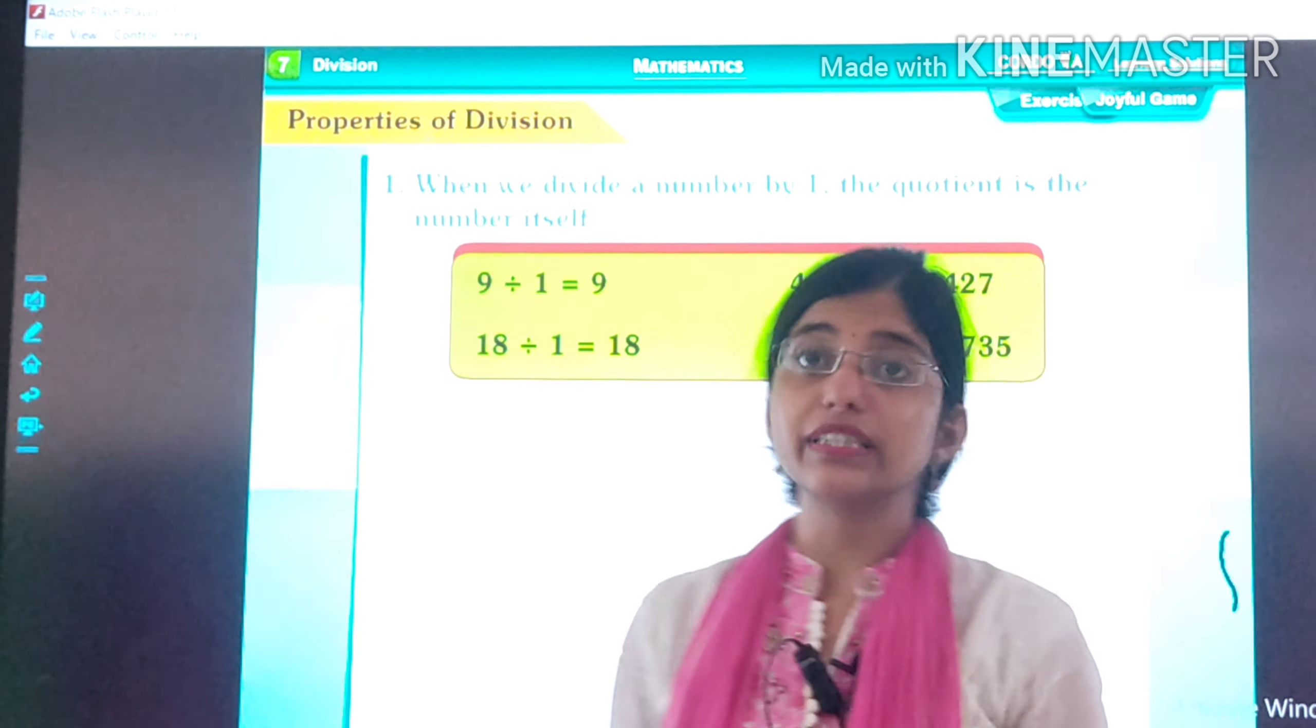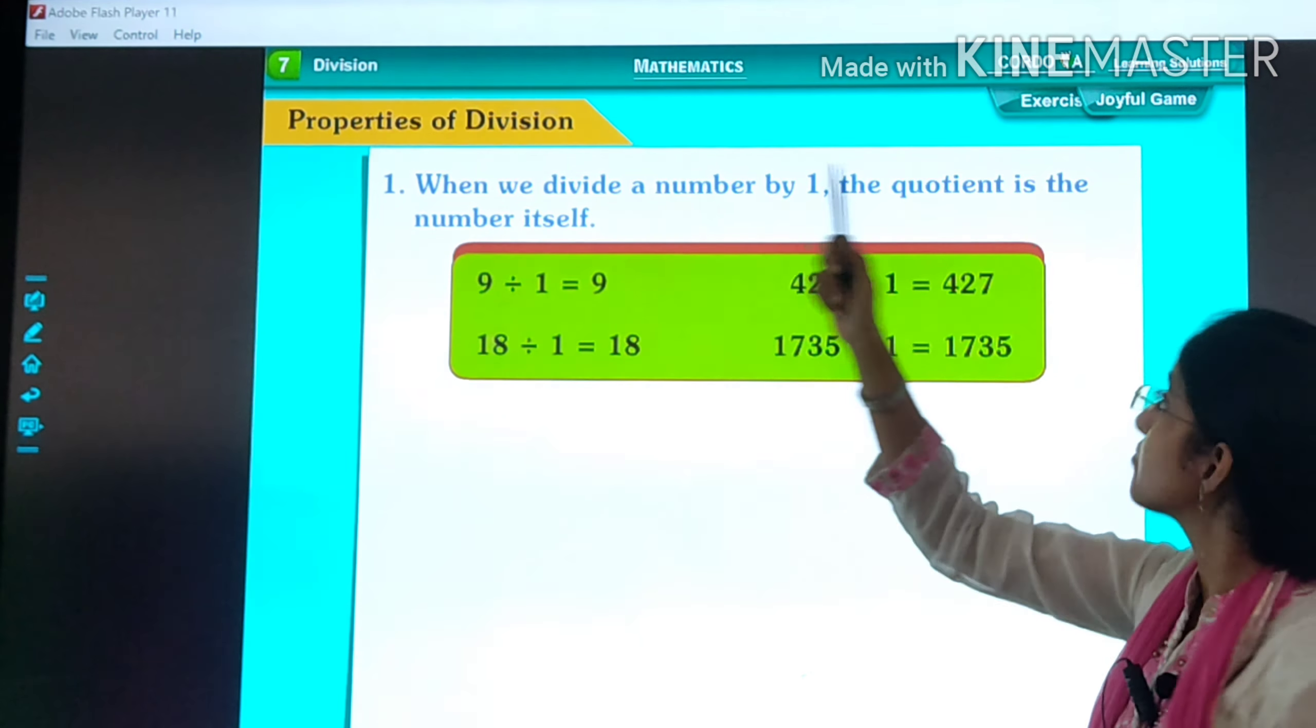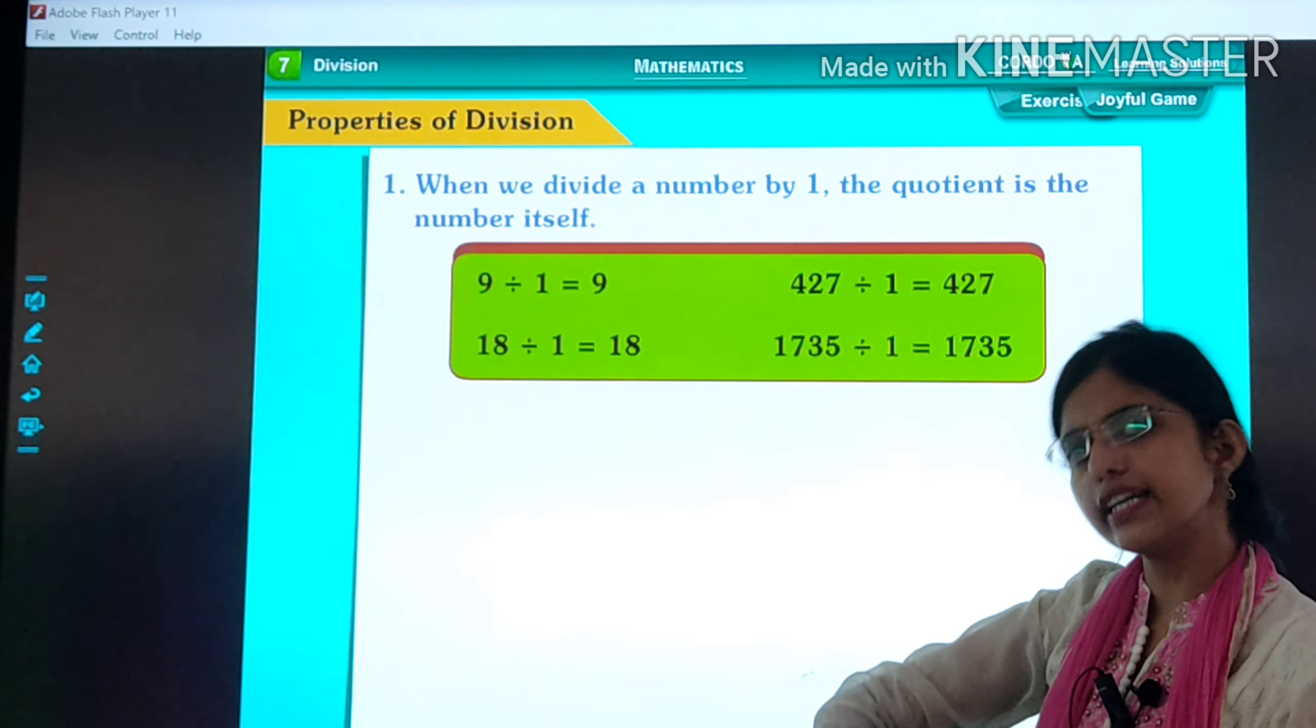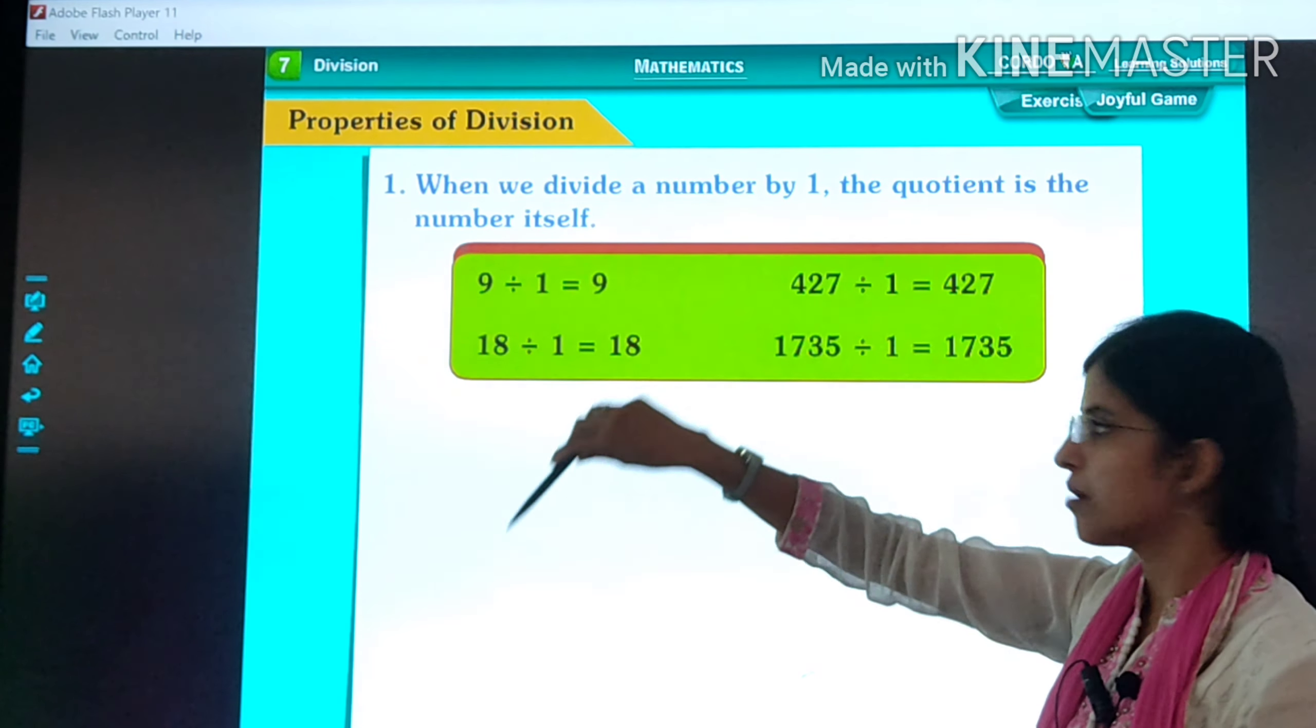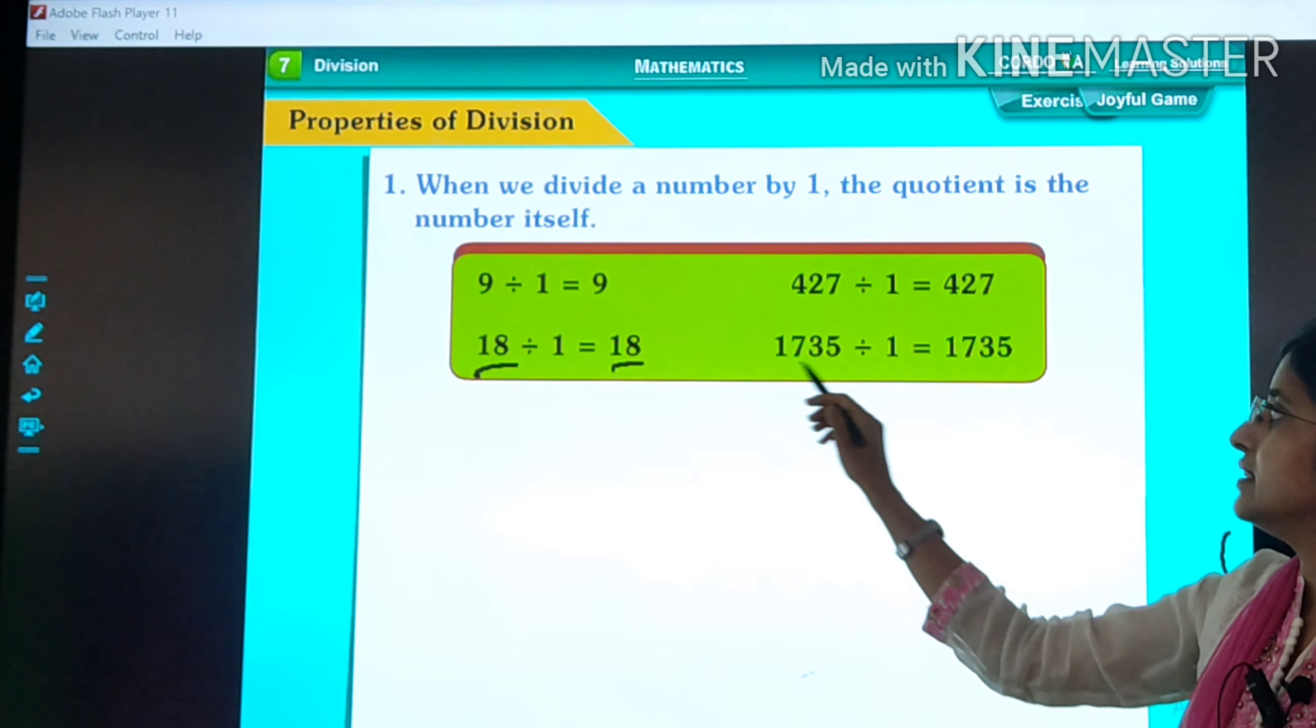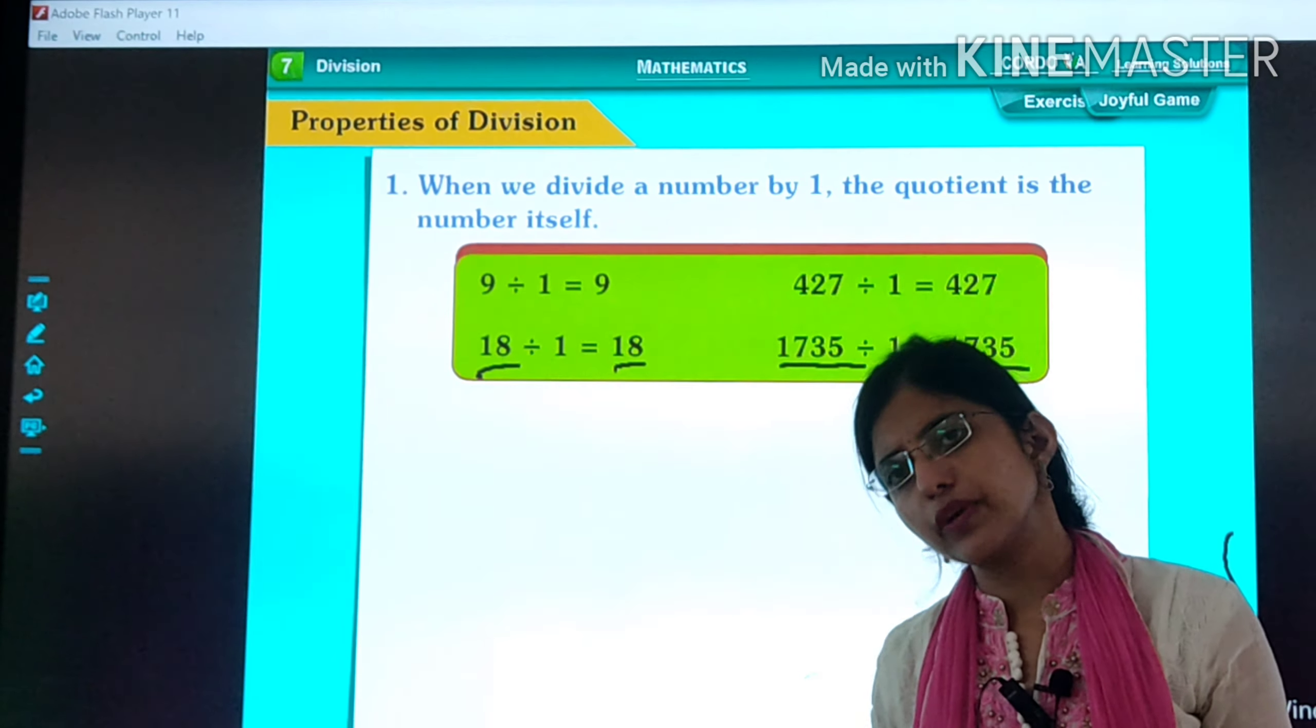Now we will study properties of division. The first property: When we divide a number by 1, the quotient is the number itself. See, 9 divided by 1 is 9. We will always get the quotient as the same number. 427 divided by 1 is 427. 18 divided by 1 is 18. 1735 divided by 1 is 1735. It is very simple.